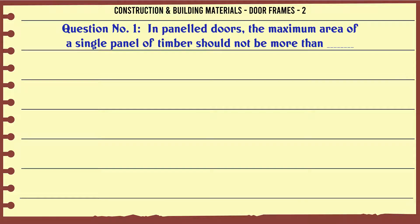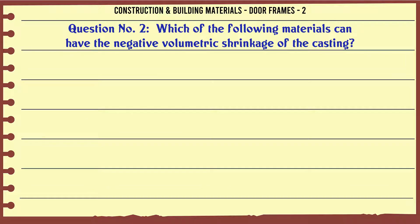Question 1: In paneled doors, the maximum area of a single panel of timber should not be more than: A. 0.5 m², B. 1 m², C. 1.5 m², D. 2 m². The correct answer is 0.5 m².